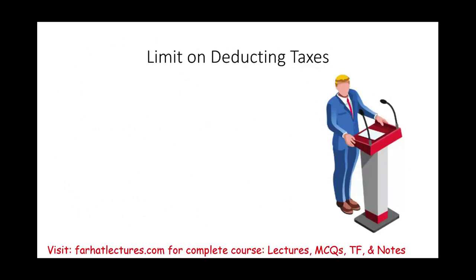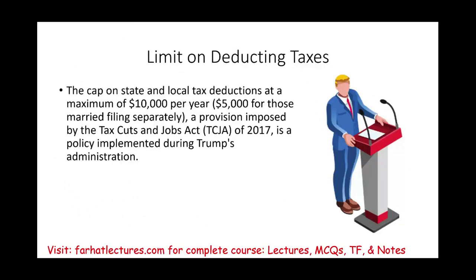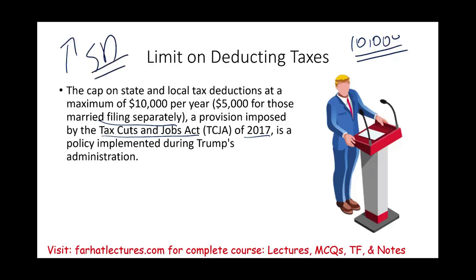Bear in mind, there is a limit on deducting taxes. The limit is $10,000 for married filing jointly and $5,000 for filing separately. This provision was made based on the Tax Cuts and Jobs Act of 2017, a policy administered by the Trump administration. They limited your tax deduction to $10,000 and in exchange increased the standard deduction, to simplify the process.